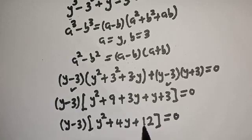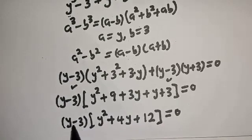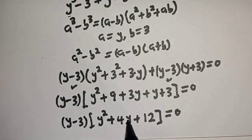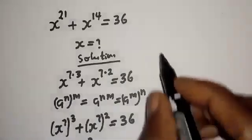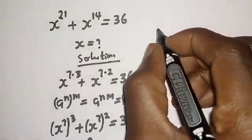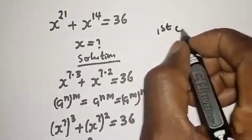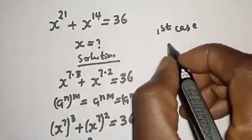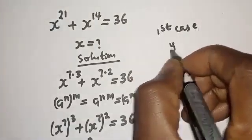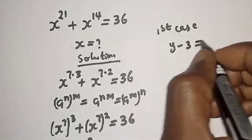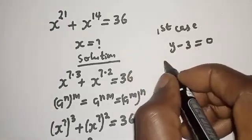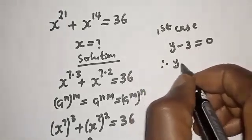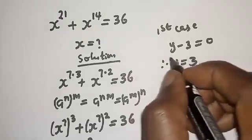There are two cases. The first case is y minus 3 equals 0. The second case is y squared plus 4y plus 12 equals 0. For the first case, y minus 3 equals 0, therefore y equals 3.